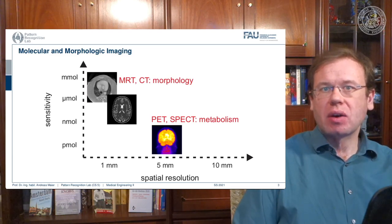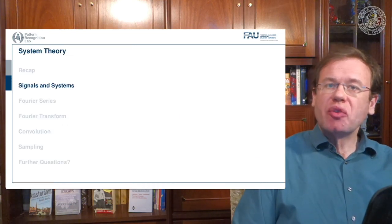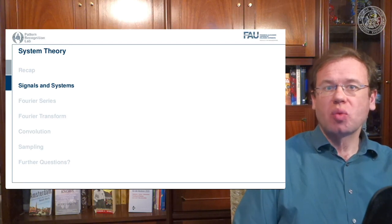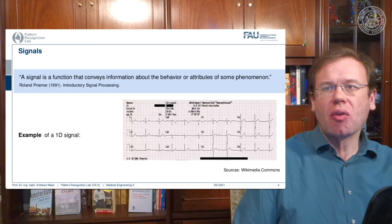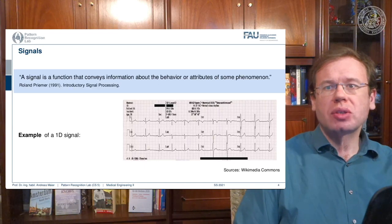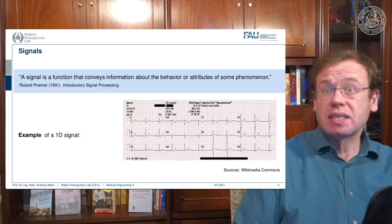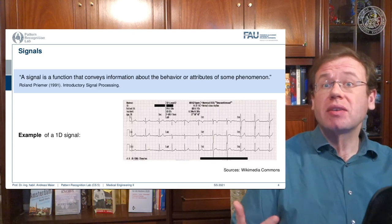Systems theory is generally a theory that allows us to work with different things that are processing information or signals. Now, signals and systems are the key components of systems theory. What is a signal? A signal is a function that conveys information about the behavior or attributes of some phenomenon. As an example, an ECG is a signal - it is essentially a voltage measured from the body, and we use it to measure how the heart behaves inside your body. So this is information: we want to diagnose the heart, and we look at the voltage generated by electrodes attached to your body.